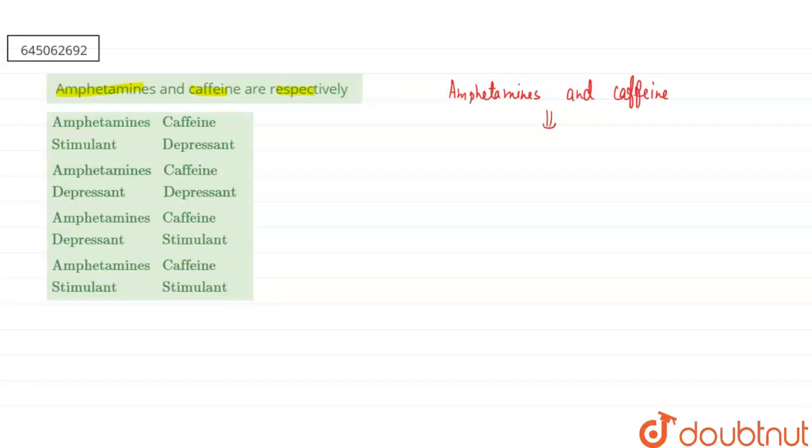So these are the example of the nerve stimulants here. These will be our example of the nerve stimulants. That means here these will have the receptors which will be present in the nervous system here. They will consist of the nerve receptors.